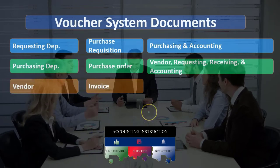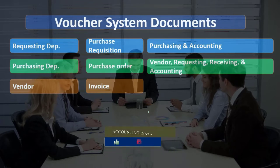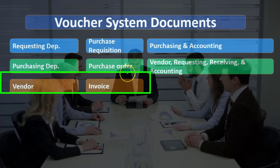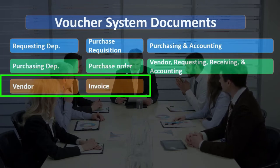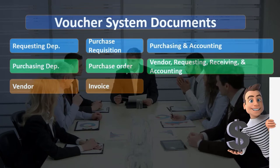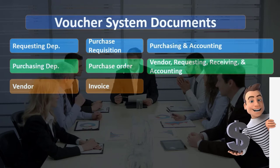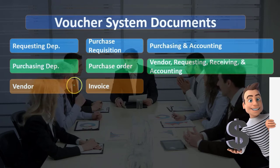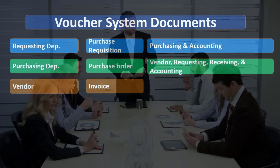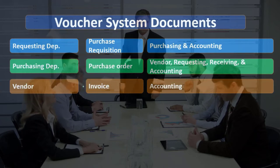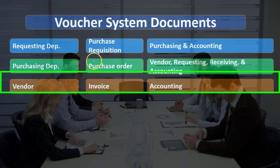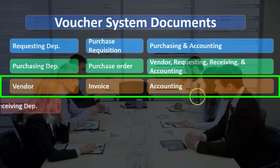The vendor is going to provide the invoice to us. Notice it's a little different than buying from Amazon, where we might pay by credit card before receiving goods. Here, we send the purchase order request and then the vendor sends the invoice, possibly at the same time we receive the goods. The invoice goes to accounting, so accounting now has the purchase request, the purchase order, and the invoice.